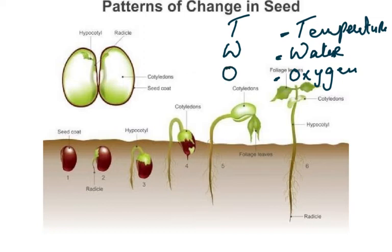When we plant the seed in the soil, the first thing that happens is that water is absorbed, the testa splits, and the radicle moves out. Then the cotyledons are moved up, the little baby plant starts to grow, and the first leaves start to develop. The cotyledons have now reduced in mass because all the food store has been used up.